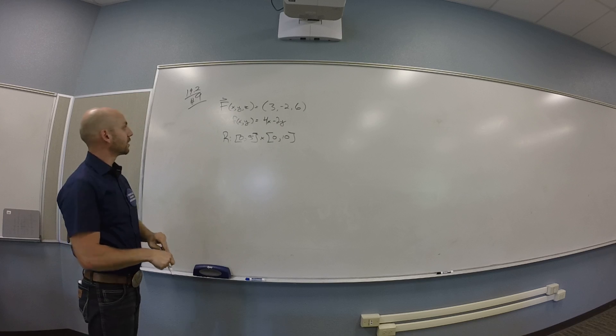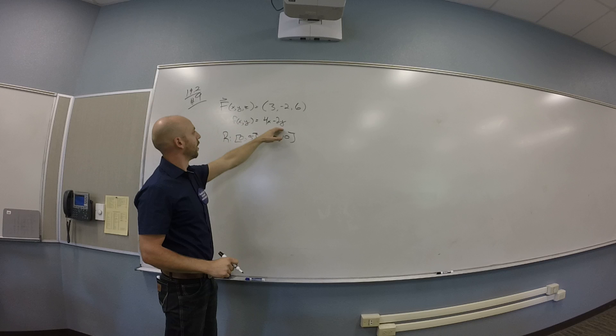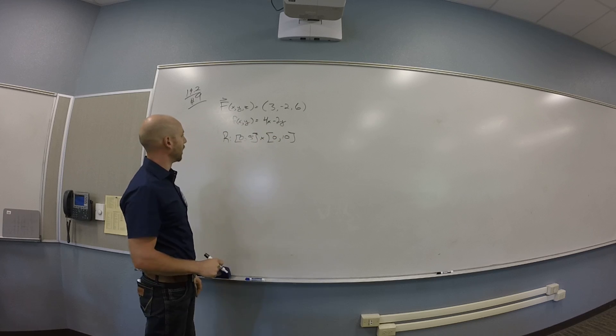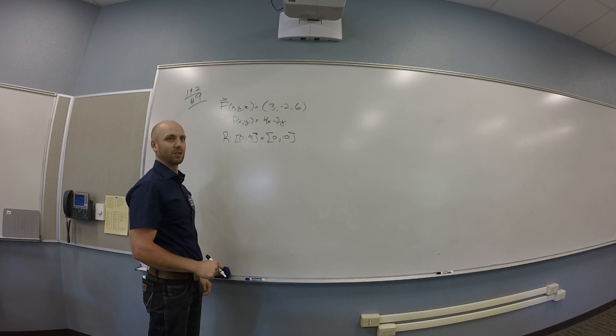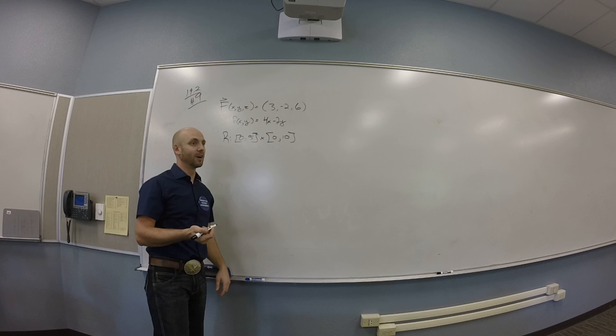And I want to know the flux through some function. F of x and y is 4x minus 2y over some rectangle. What the heck do they mean flux through a function? Through the surface of the function. Yeah, really through the graph of the function, right?